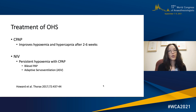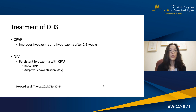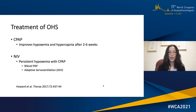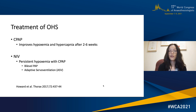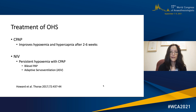The mainstay of treatment of OHS remains positive airway pressure therapy. CPAP is the first line of treatment, and this has been shown to improve hypoxemia and hypercapnia after two to six weeks of initiation. When CPAP is unsuccessful in relieving persistent hypoxemia, non-invasive ventilation is recommended in the form of either bilevel PAP therapy or ASV.